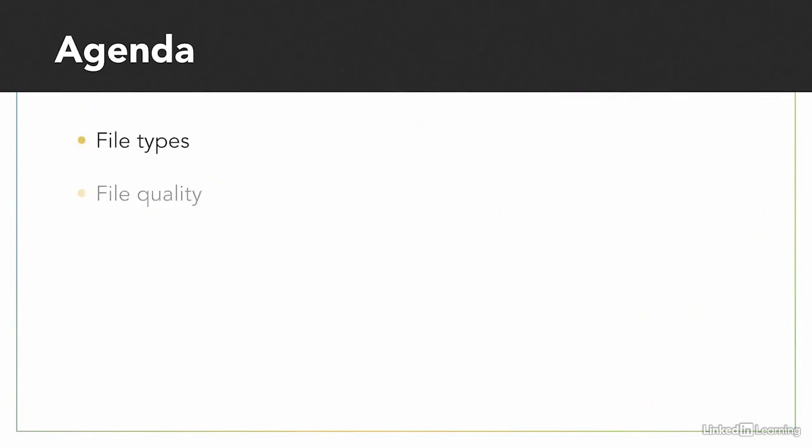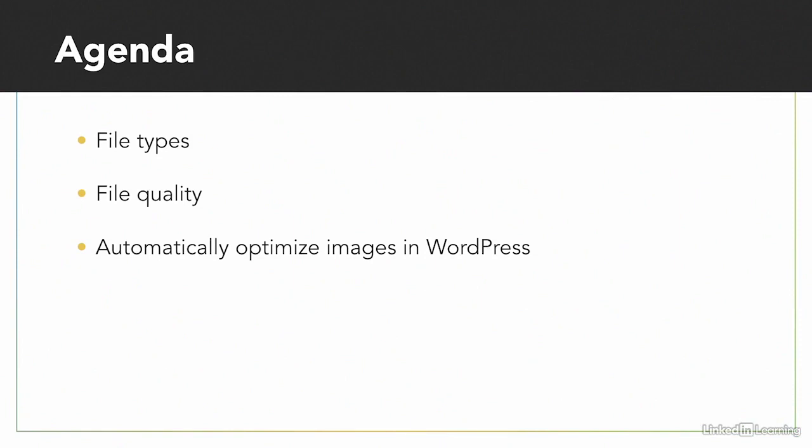There are three things we're going to look at in this lesson: different file types, file quality, and how to automatically optimize images in WordPress.